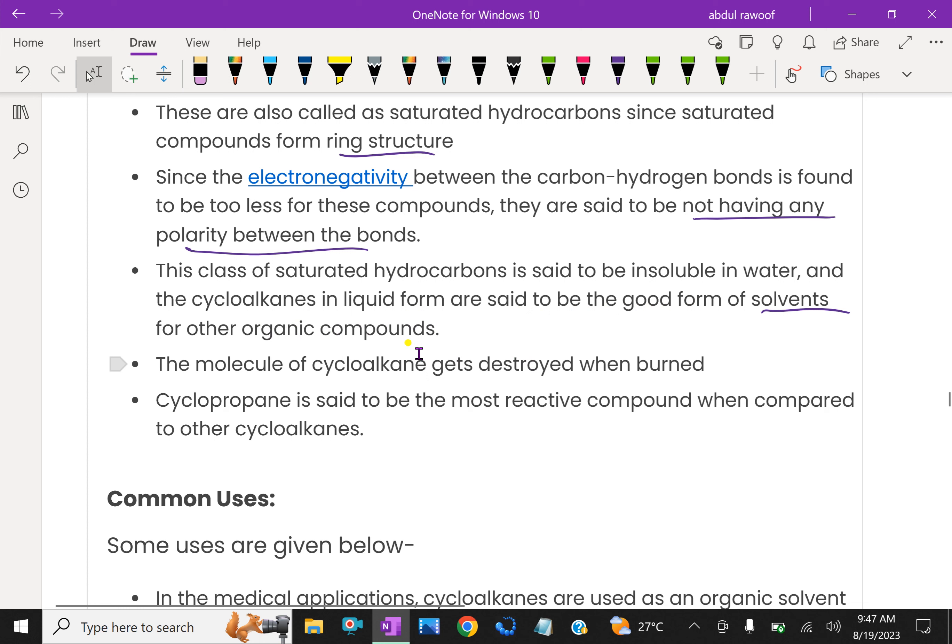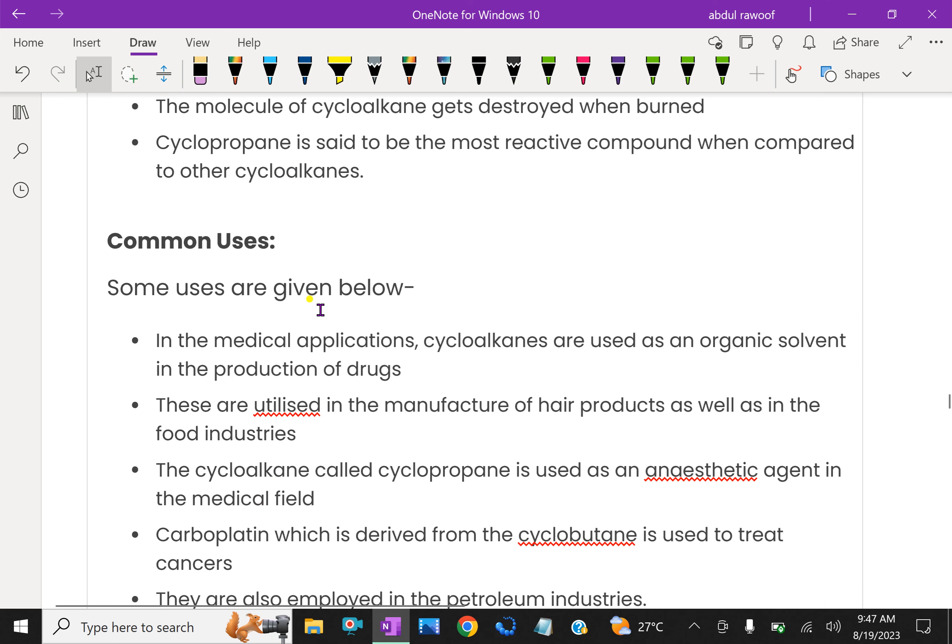The molecules of cycloalkanes get destroyed when burned. Cyclopropane is said to be the most reactive compound when compared to other cycloalkanes. Cyclopropane is said to be most reactive.